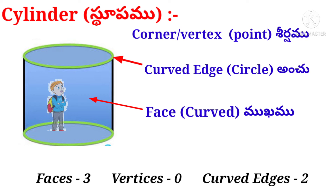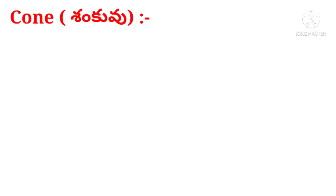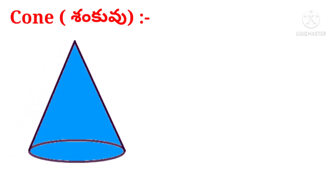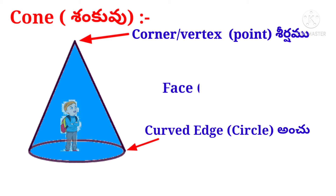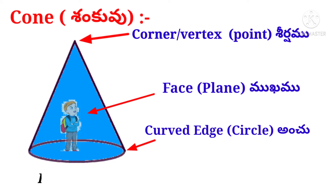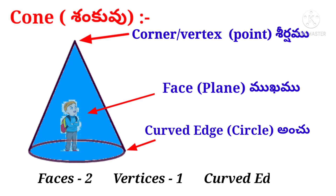Now let us take the picture of a cone. Observe that there is only one corner at the top, the faces are curved, and the edges are also curved. Suppose a boy entered a room in the shape of a cone. He observed one curved face on the sides and one circular face in the flooring — total two faces. There is only one corner at the top, so one vertex. There is only one curved edge in the flooring in the shape of a circle — so one curved edge.